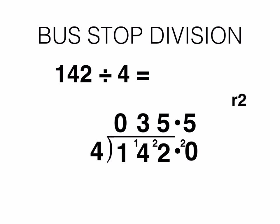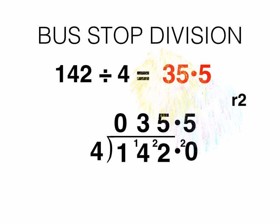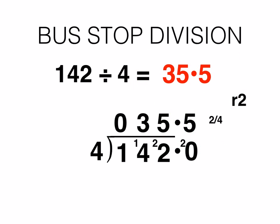We are now going to look at how the remainder of 2 is the same as 0.5. The remainder of 2 can be written as a fraction because it is 2 out of 4, which equals a half, which is the same as 0.5. So the answer of 35.5 is the same as 35 remainder 2, because a remainder of 2 is actually 2 quarters, or a half, or 0.5.